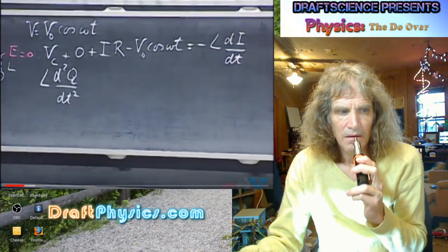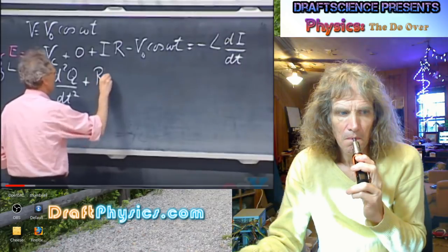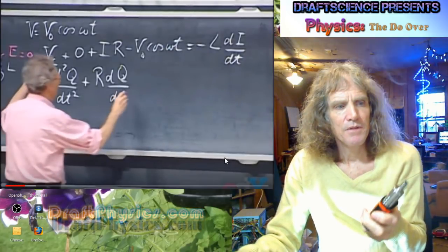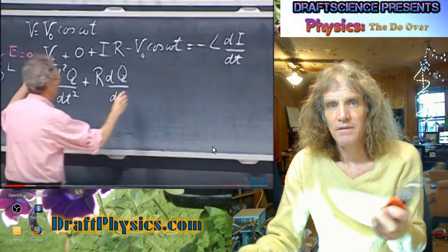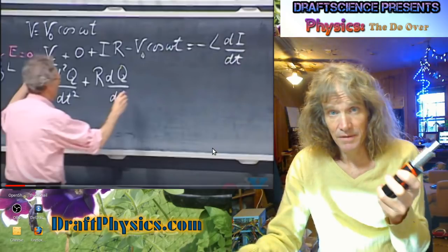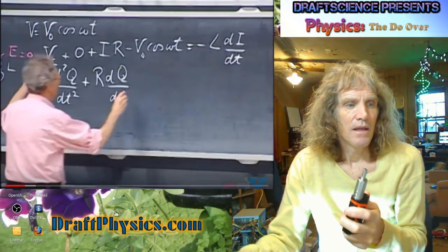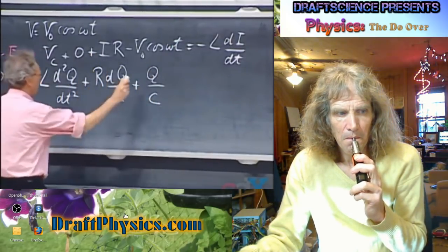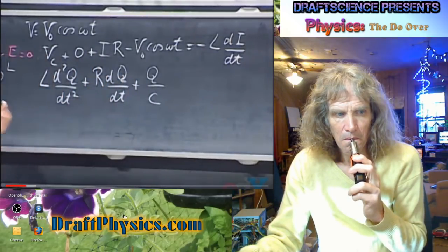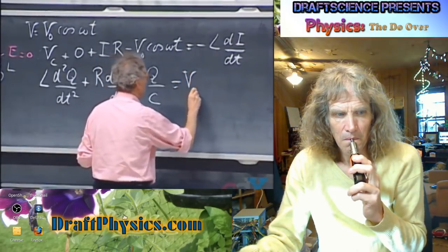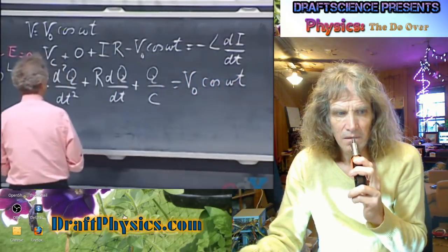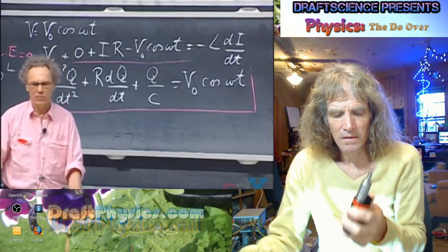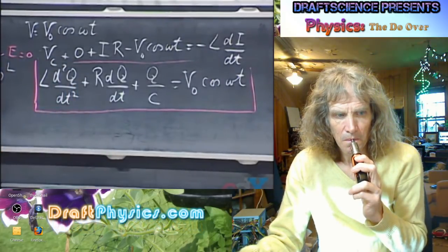Then my iR becomes R times dq/dt. The V of C becomes q divided by C. I ranked it in order: d²q/dt², dq/dt, and then q. And we get equals V0 cosine(ωt). This is the form in which most books present this differential equation. Most books arrive at this equation in a completely wrong way, but they end up with this equation.